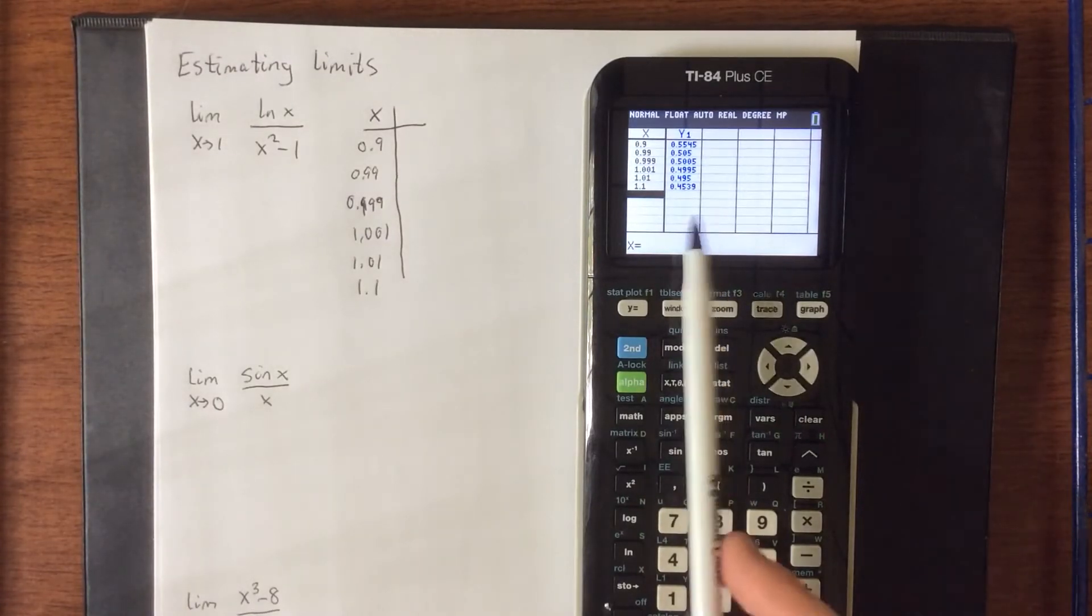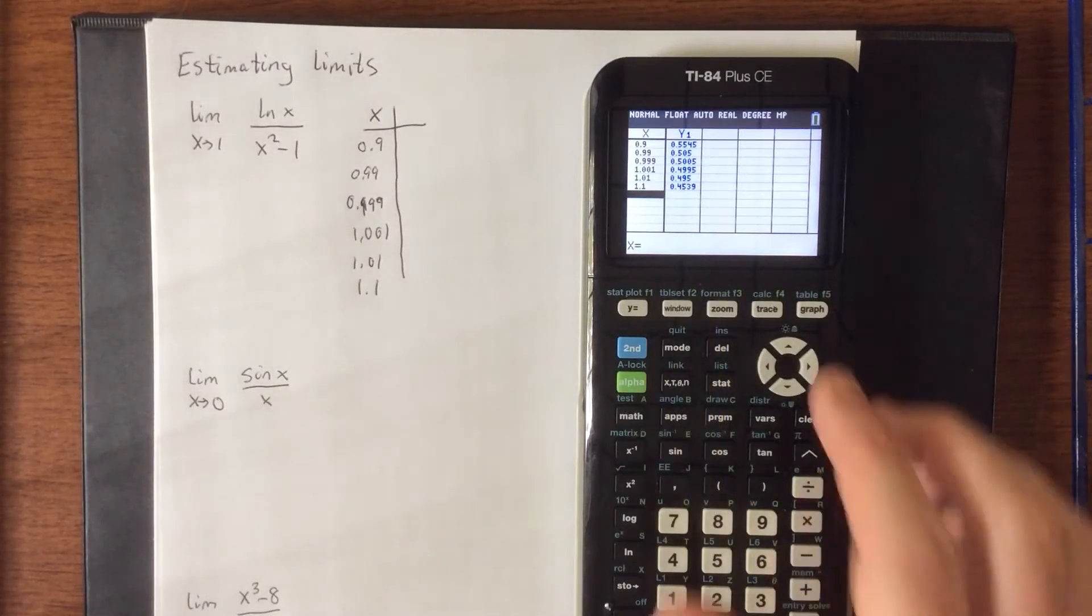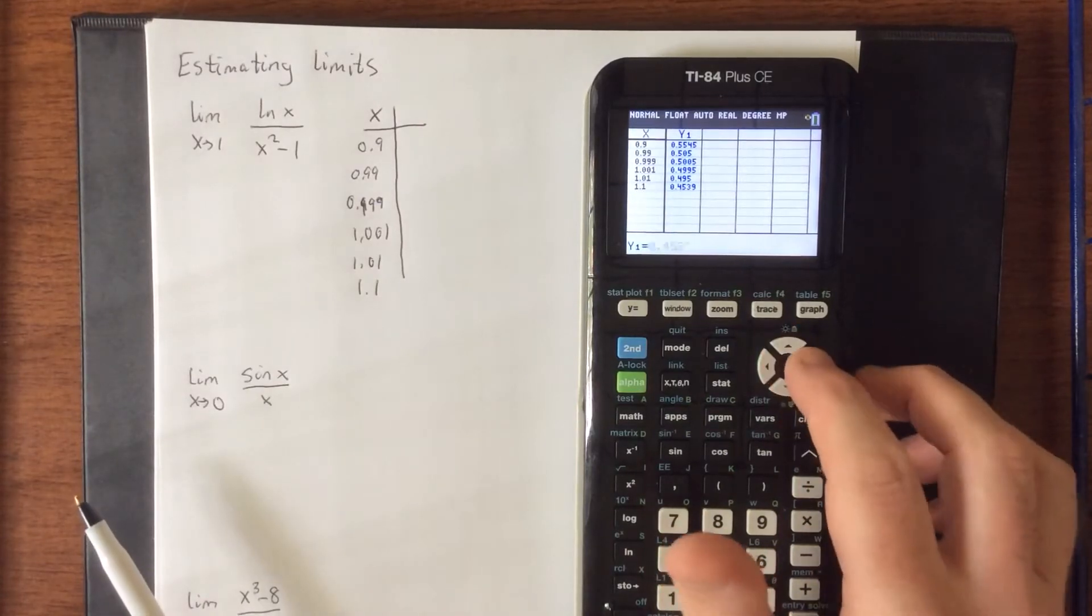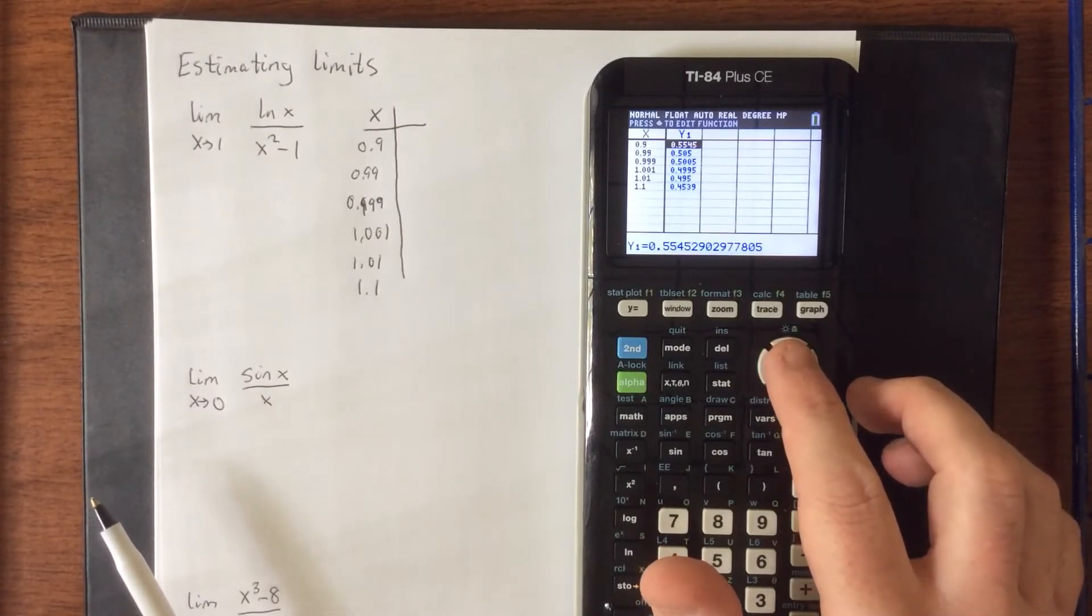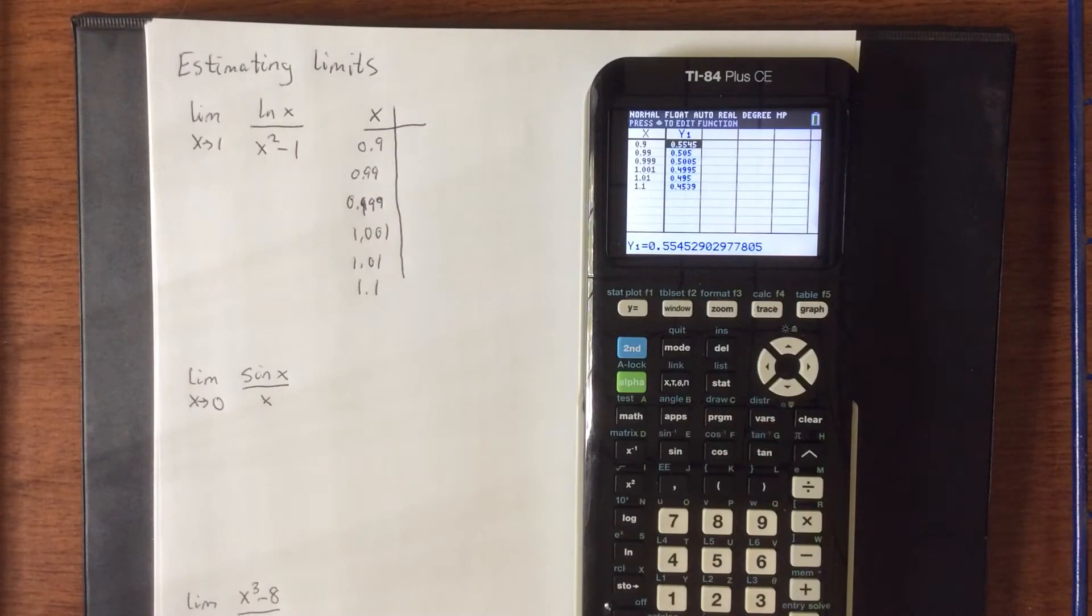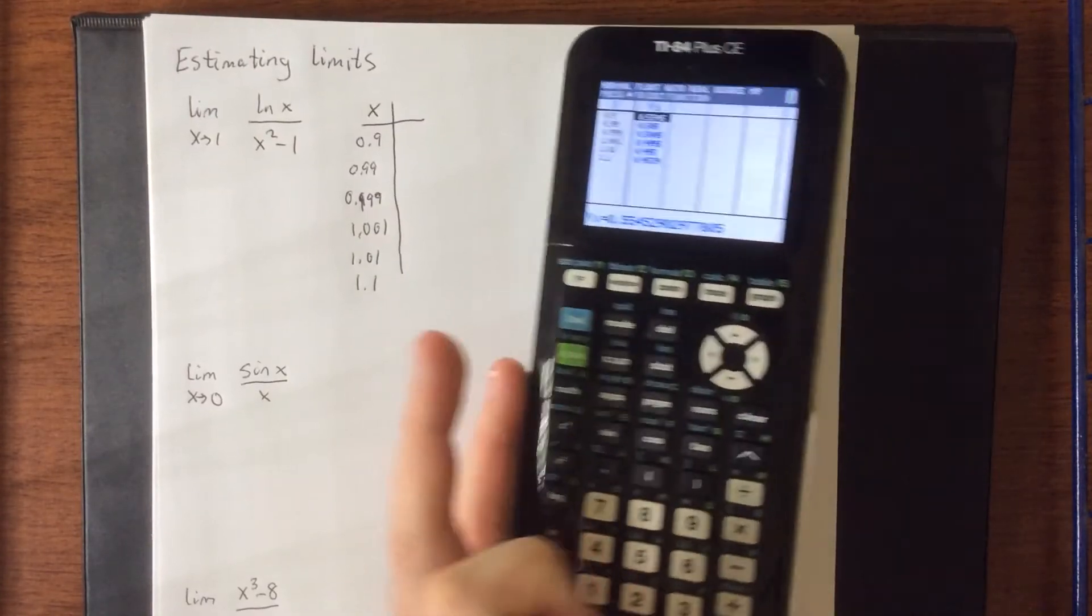Now the calculator is going to default to rounding them to four decimal places. If you ever want to see more than four decimal places, put your cursor directly on top of whichever entry you're trying to take a look at. We'll just stick with four decimal places for now though, as we copy these values into our table.